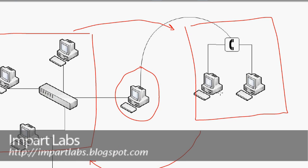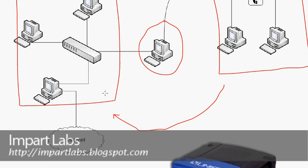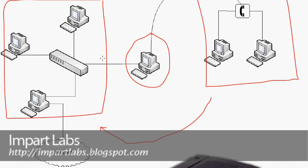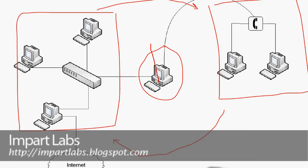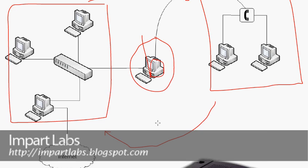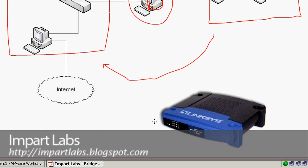For example, these two computers would be able to use the internet connection and share files with each other. As you see here, the bridge here — I'll put a big B on it — is a computer placed in between. So, to make it clear, we've got two types of bridges: software bridges and hardware bridges.